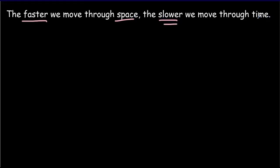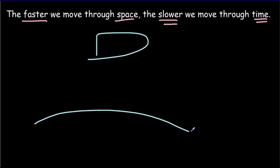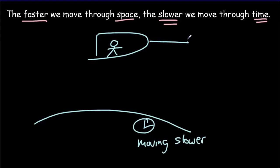Space and time are entangled with one another. We can think of this entanglement — spacetime — this way: the faster we move through space, the slower we move through time. If a rocket ship is passing the Earth, the observer on the rocket ship would see clocks on Earth moving slowly. And the faster that rocket ship passes, the slower those clocks move. So the faster we move through space, the slower we move through time.